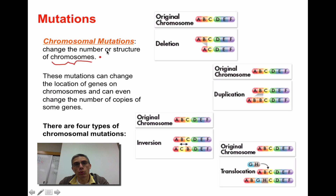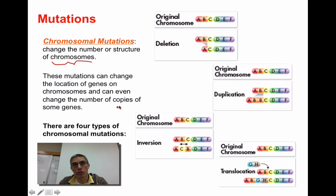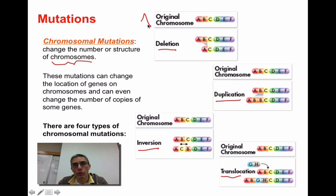We're working with larger chunks of genetic material. These mutations can change the location of genes on the chromosomes, which means things can be switched around and could even change the number of copies of some genes. We have four different types: deletion, duplication, inversion, and translocation.